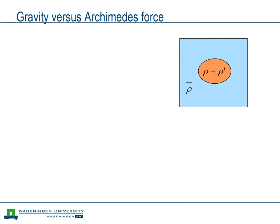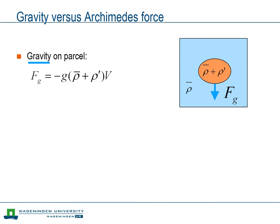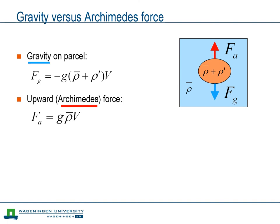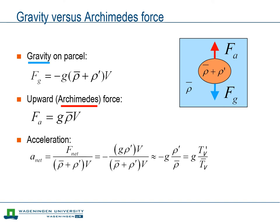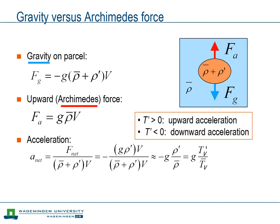Now that we know how to quantify density fluctuations, it is time to put this knowledge into action. We consider an air parcel with a density that is the sum of the mean density of the surrounding fluid plus a deviation from that mean state, rho prime. Gravity pulls the parcel downward based on its density, while an upward Archimedes force acts on it based on the density of the displaced fluid. The net acceleration is the net force divided by the mass of the parcel, related to the relative density fluctuation — and hence to the relative virtual temperature fluctuation. If the temperature of the parcel is larger than that of its surroundings, the parcel is accelerated upward: warm air tends to rise.